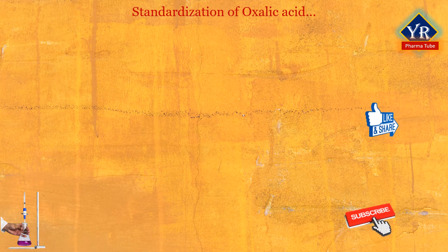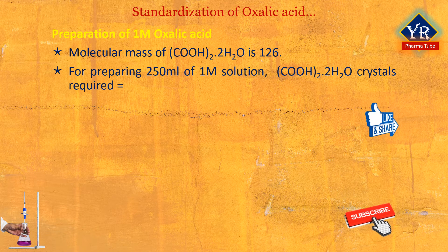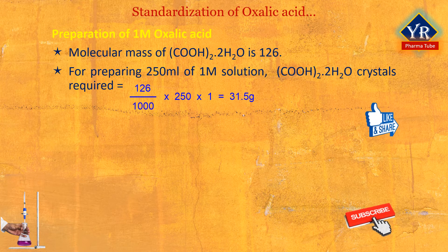In the standardization of oxalic acid, we need to prepare two standard solutions. The first one is 1 molar oxalic acid solution. The molecular mass of oxalic acid is 126. Hence, for preparing 1000 ml of 1 molar oxalic acid, weight of oxalic acid crystals required are 126 grams. Therefore, for preparing 250 ml of 1 molar solution, that is 126 divided by 1000 ml multiplied by 250 ml multiplied by the concentration 1, gives 31.50 grams.